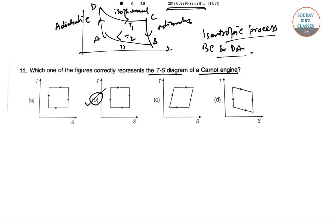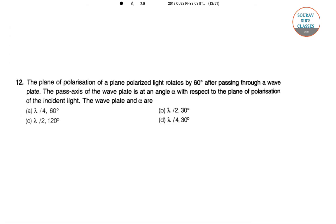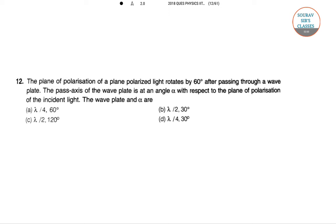Next one is question 12. Polarization plane, polarization of a plane polarized light rotates by 60 degree after passing through a wave plate. The pass axis of the wave plate is at an angle alpha with respect to the plane of polarization of the incident light. So we have wave plate and alpha ko nikalna hai.